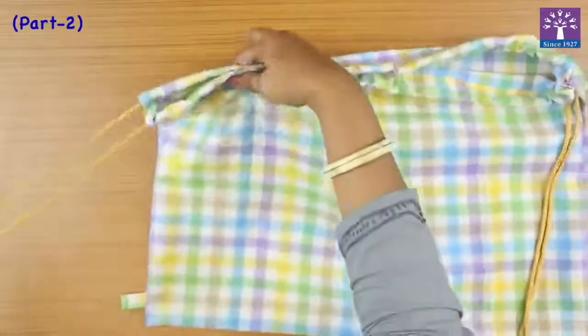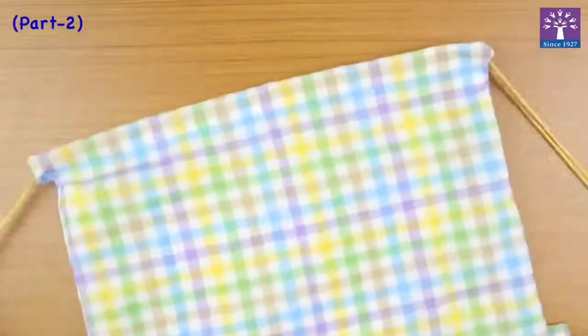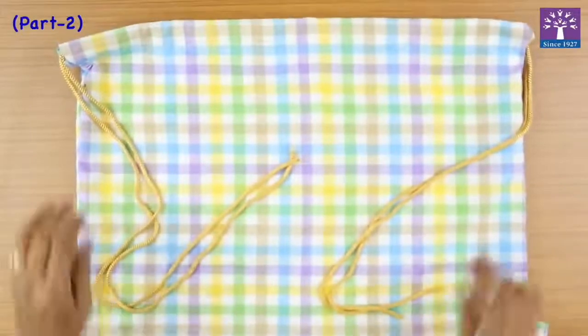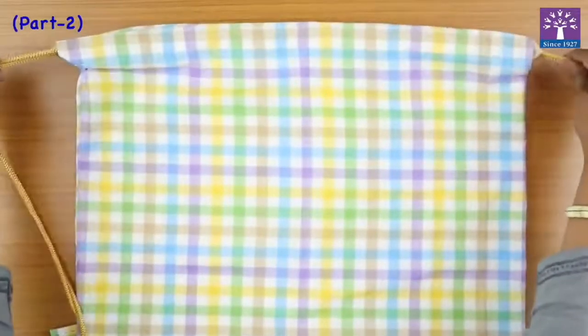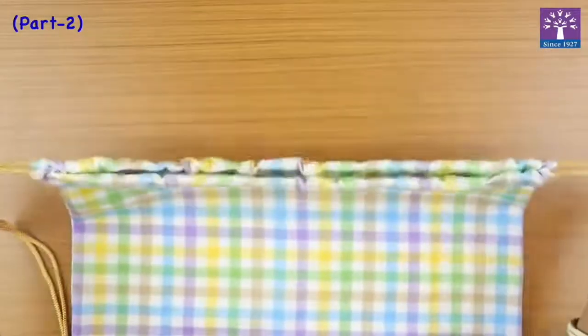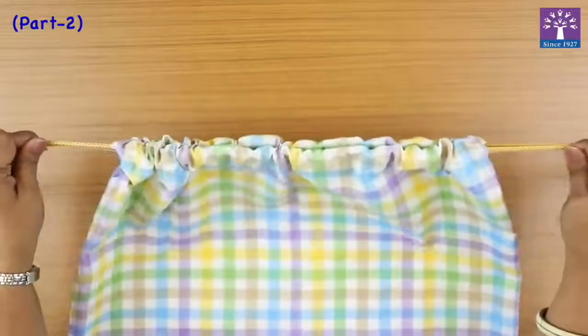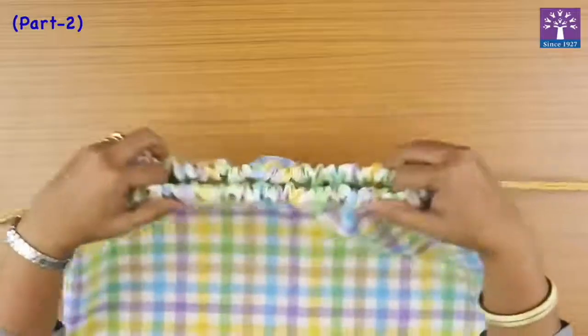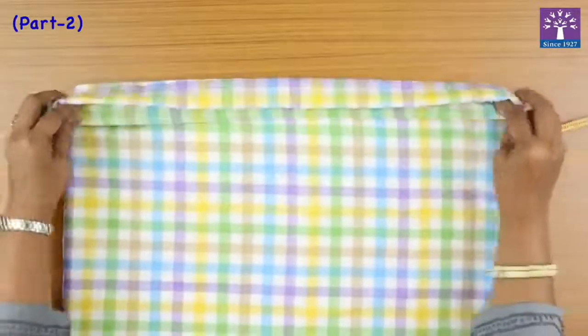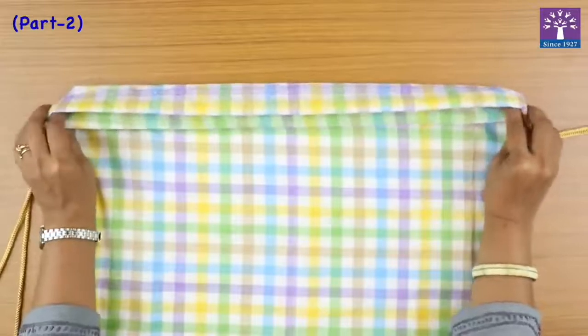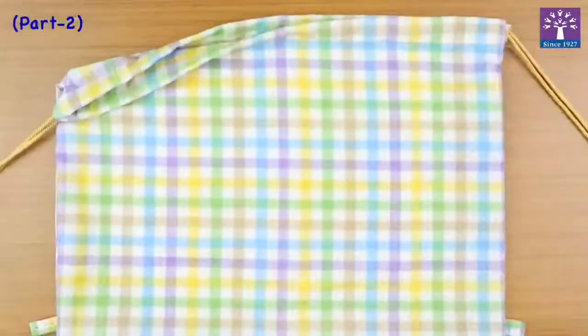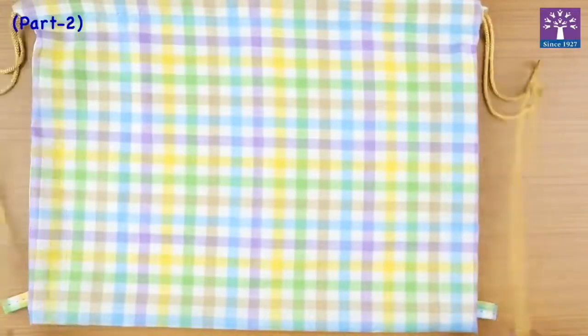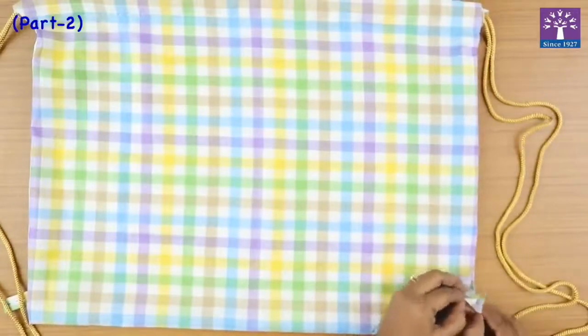Again adjust the length of this cord. See, we have passed these two cords from both the sides like this. How our bag is going to work is you have to simply pull these two cords and your bag closes automatically. Just try this before you tie a knot. This thing works, then again open it. Now we are going to fix the two ends in the loop that we have stitched in the corners of the bag.